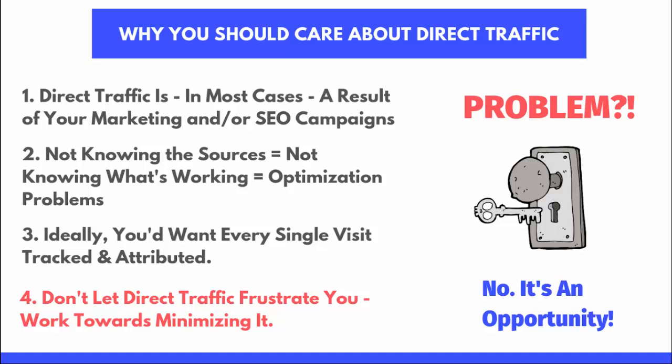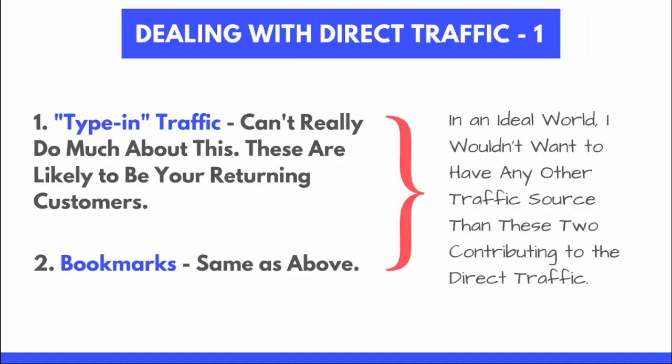Don't let direct traffic frustrate you — work towards minimizing it and splitting it up. If there are a lot of referrals coming in, create unique tracking codes for them. For example, tag your 2017, 2018, 2019 brochures separately, and next year's as 2020 or 2021 — make it granular. This is actually a massive opportunity: if you do this for things like YouTube or specific Google Docs sent to clients, you can actually see who's clicking and who's getting in touch, whereas without it you just have a massive direct bucket and no idea what's going on.